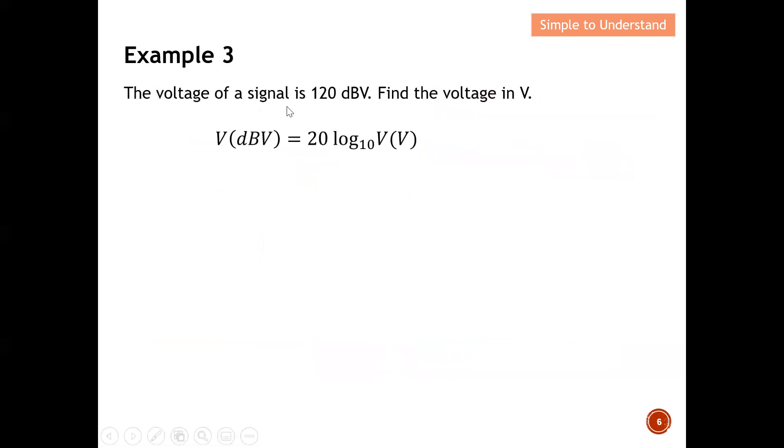Example 3. Okay. The voltage of a signal is 120 dBV. Find the voltage in voltage. So, this is the equation. Okay. So, again from here, I know that this is 120. So, I substitute 120 here. So, this is the equation. First thing, I need to remove away this 20.